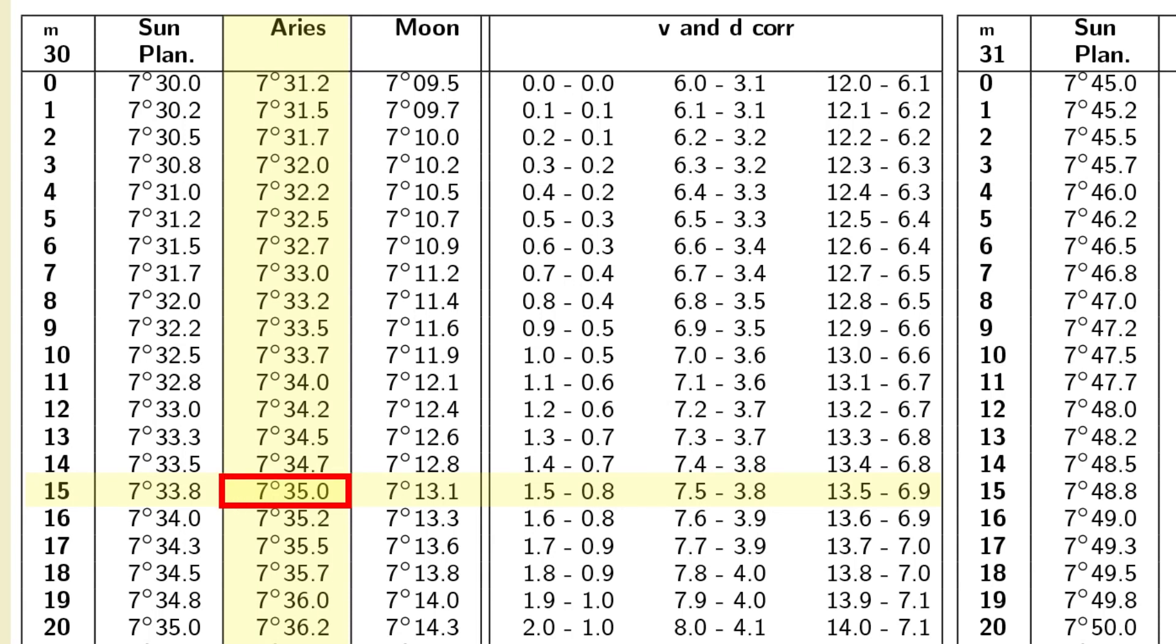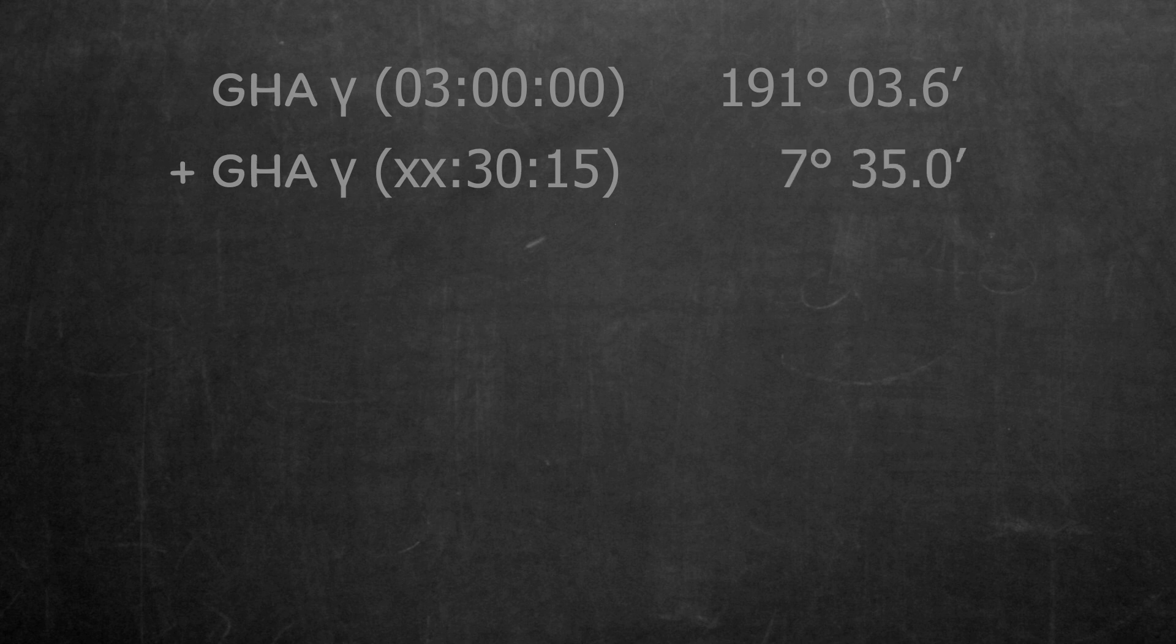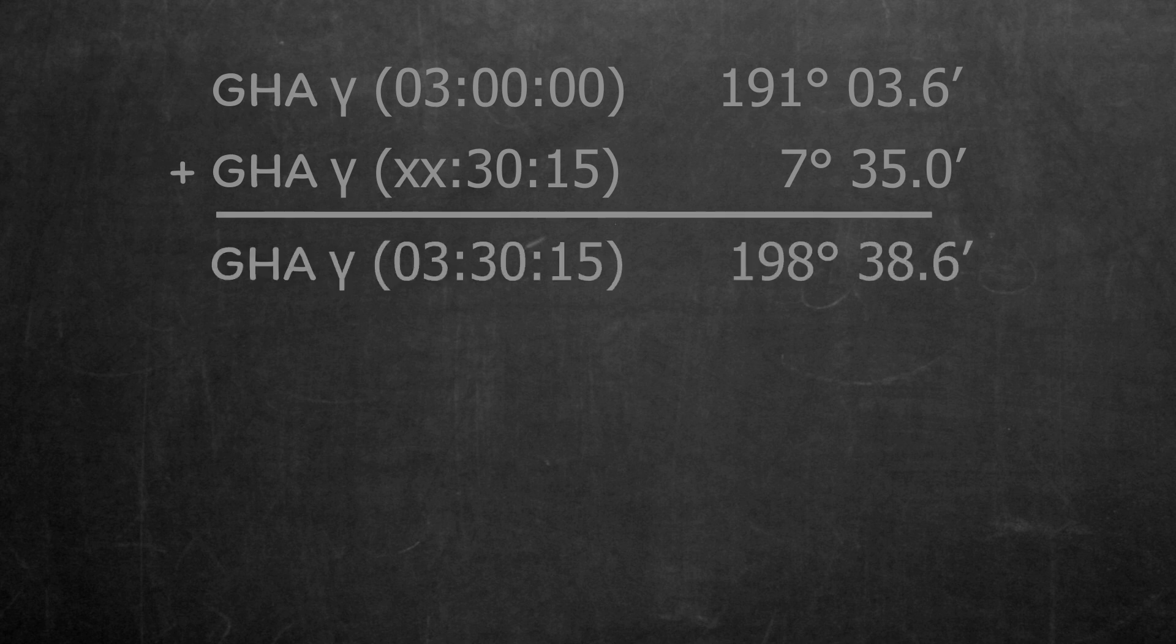We can then apply our increment to the 0300 Greenwich Hour Angle to get the Greenwich Hour Angle of Aries at the precise time that we need, which is 198 degrees, 38.6 minutes.